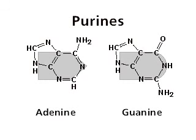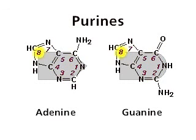The atoms in the purines are numbered 1, 2, 3, 4, 5, 6, 7, 8, and 9. Note the structural differences between adenine and guanine at positions 2 and 6.